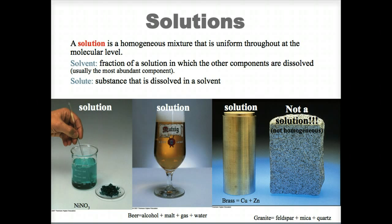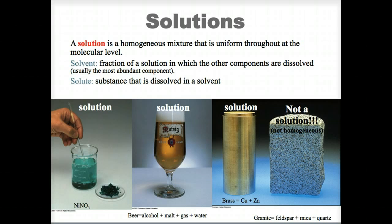When water is a solvent, you have an aqueous solution. Solutions have the following characteristics: uniform particle distribution; they do not separate over time; they cannot be separated by filtration; solutions are often transparent; and solutions can be separated into pure components. That separation is a physical change, not a chemical change. For most solvent-solute combinations, it is possible to make solutions of many different compositions.